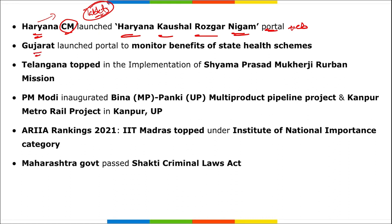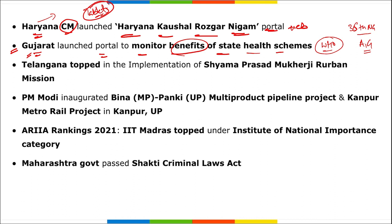Gujarat launched a portal to monitor benefits of state health schemes. Also recall Gujarat-related facts: GIFT City, the first steel slag road, Global Centre for Traditional Medicines in Jamnagar (with WHO support), the 36th National Games in Gujarat, and Gujarat being the first state to adopt the semiconductor policy - with Foxconn and Vedanta signing an MoU for semiconductor manufacturing. Telangana topped implementation of the Shyama Prasad Mukherjee Urban Mission.